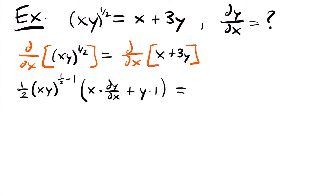This equals the derivative with respect to x of x plus 3y. The derivative of x is 1, and the derivative of 3y is 3, but since y is not x, we also need to multiply by dy/dx. Remember: when you take a derivative with respect to x of a variable that isn't x, such as y, treat it as if it were x and then multiply by dy/dx. Every time you take a derivative of y, you need to multiply by that dy/dx term.